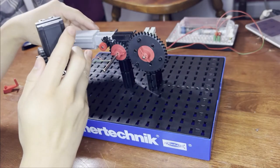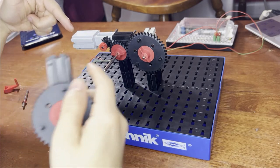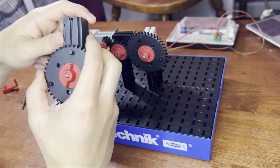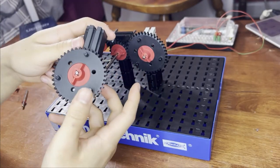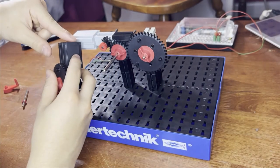If you use the smaller gear as the input gear with the larger gear as the output gear, then the output gear will be much slower but it'll have more torque. And this is assuming that both of these input the same force, which is the motors.